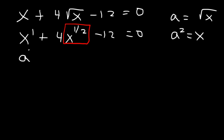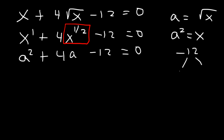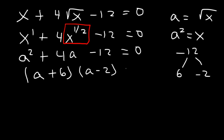So this is a squared plus 4a minus 12. Two numbers that multiply to negative 12 but add to positive 4 are positive 6 and negative 2. So it's going to be a plus 6 and a minus 2. Solving for a gives us a equal to negative 6 and a equal to positive 2. And a is the square root of x.